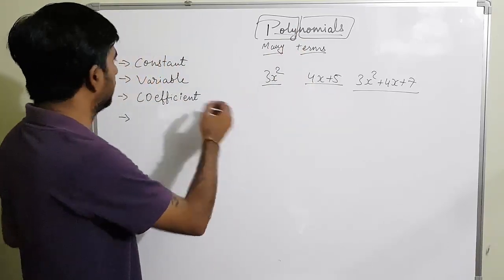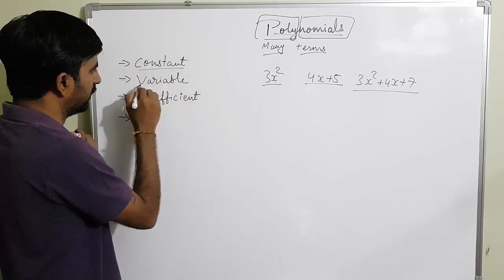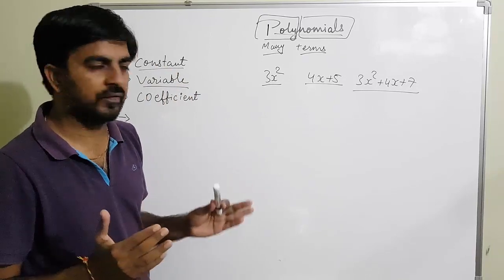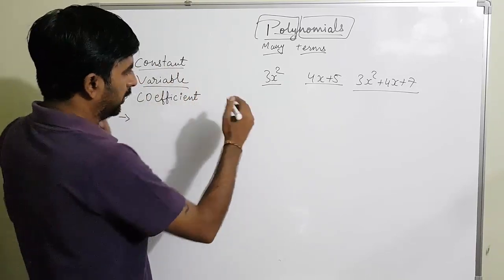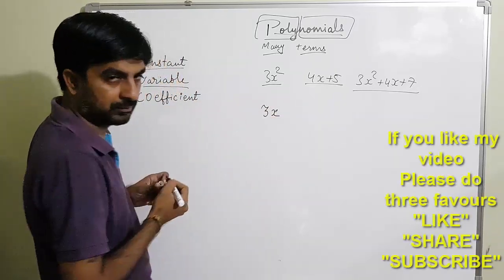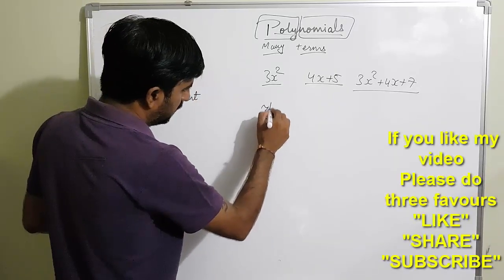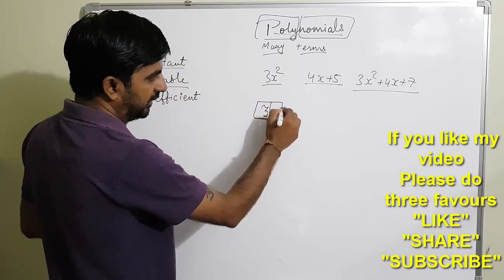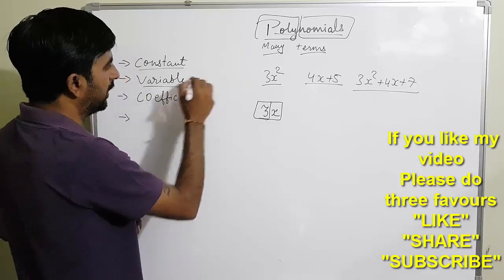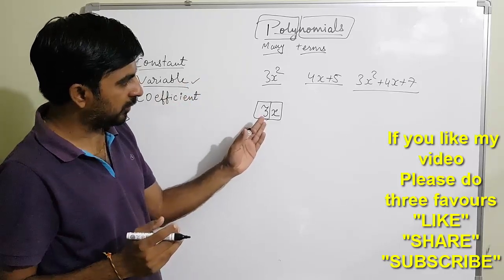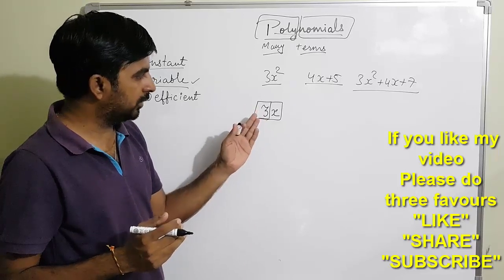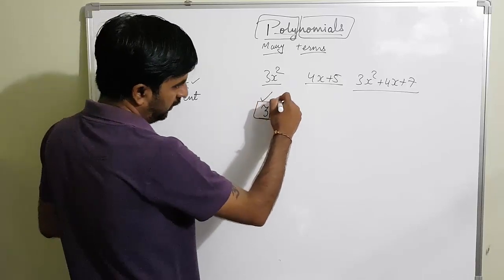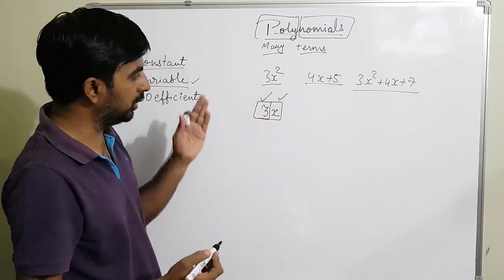For studying polynomials, we need to focus on two terms: constant and variable. A polynomial consists of constants and variables. If I say 3x, the 3 is a constant — a fixed value is called a constant. We don't know the value of x, so x is a variable. A polynomial consists of one variable and one constant.